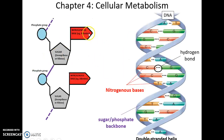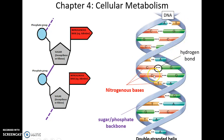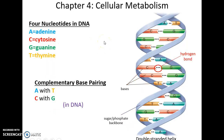Nucleotides get attached to each other to form the sugar-phosphate backbone, which forms the ribbon part of the DNA. The nitrogenous bases then form hydrogen bonds between the two strands, connecting them together.